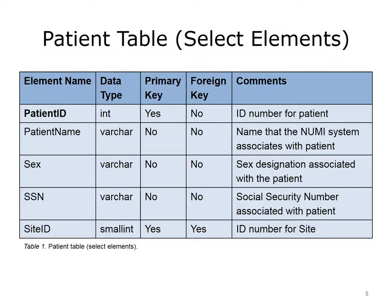Note that the element name is in bold, as it is the primary key for the table. The next three elements are varchar fields that store the name, sex, and social security number of a patient, and are not primary or foreign keys. Sex is often stored as a single character in medical applications, instead of as a varchar. The final field is another integer that stores the ID number for the site. The data type is referred to as smallint, which is an integer that uses fewer bits than a regular int. This ID is a primary key and foreign key from the site table.